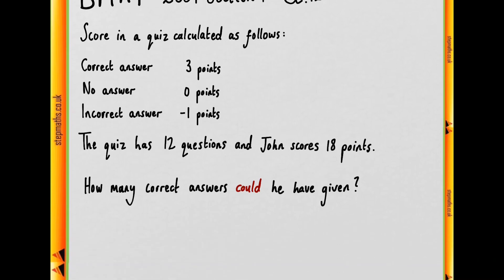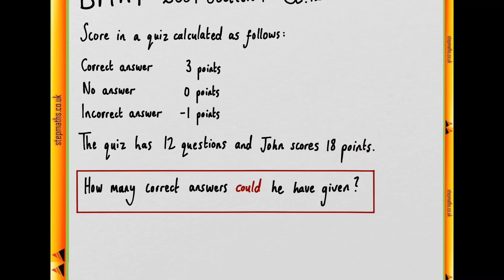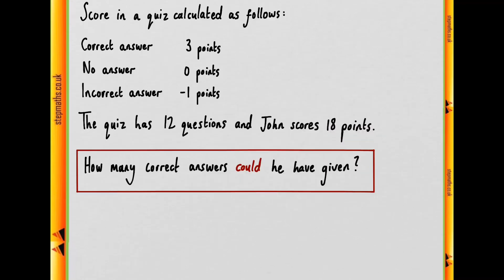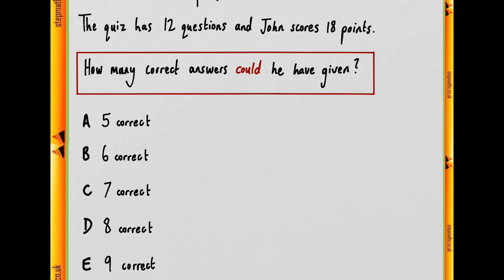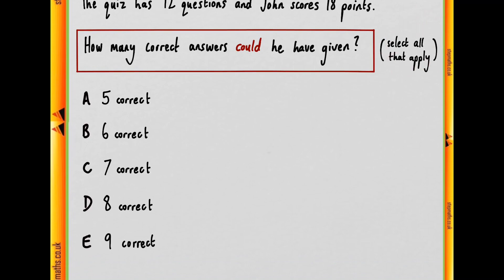So we're asked how many correct answers could he have given, bearing in mind that there are 12 questions and he scored 18 points. We have five options, A through E, and we have to select all of them that apply. So how many correct answers could he have given out of this list?